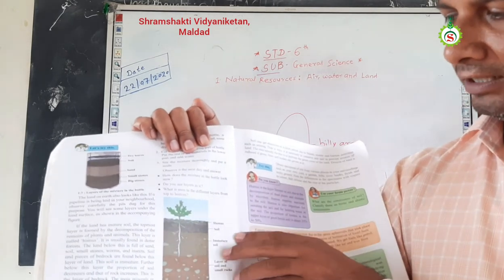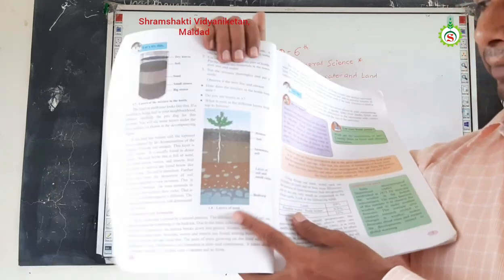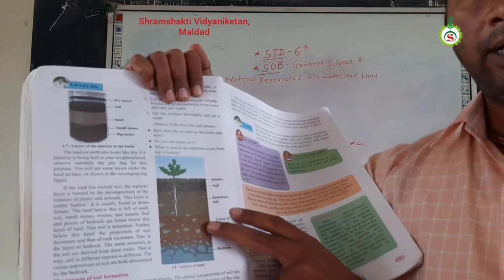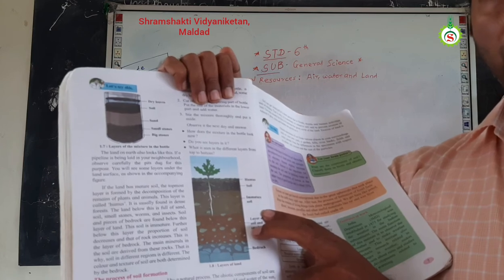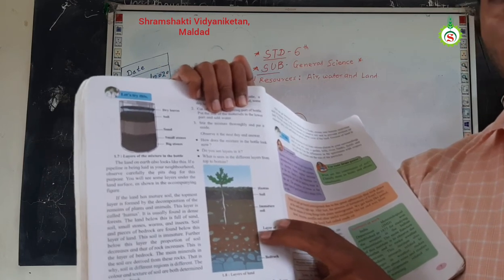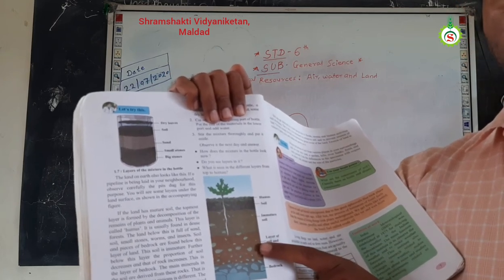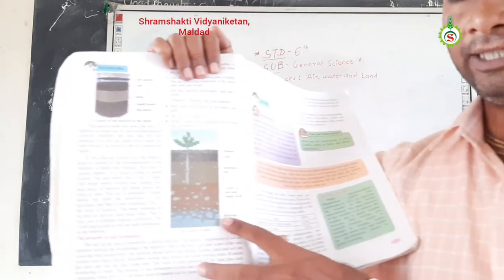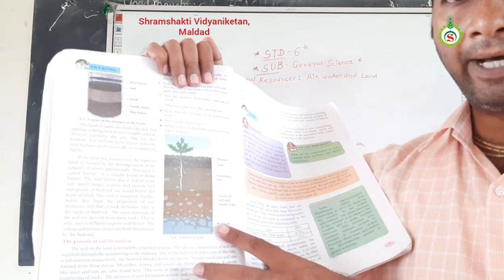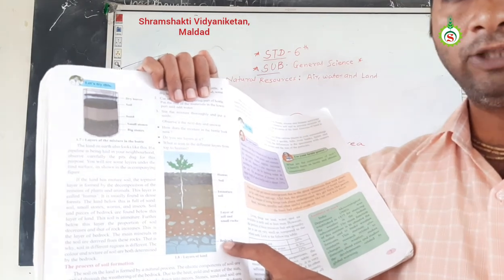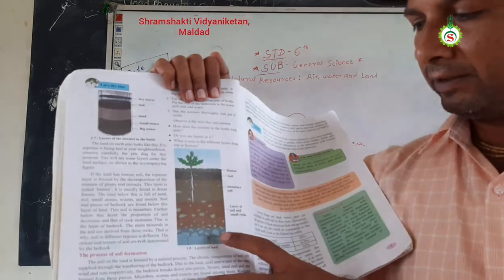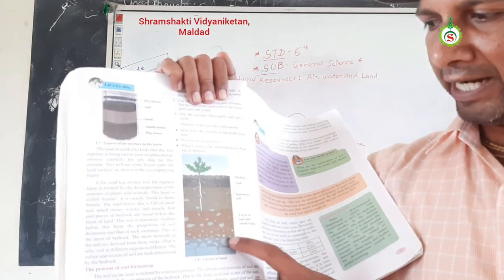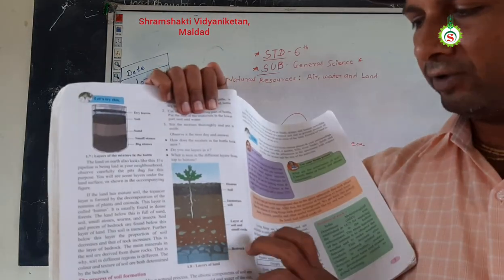The roots of the plants come into the third part of the soil, that is, immature soil. Below this third part, there is a layer of soil and small rocks. In this layer, the amount of soil goes on decreasing and the rock particles go on increasing — there is a small amount of soil and a large amount of stones. The last layer is called bedrocks, which are completely covered by big rocks. From the bedrock, we can know the texture, quality, and color of the soil.